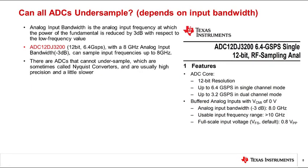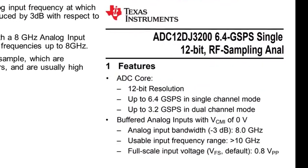Now let's understand what kind of ADCs can be used for undersampling and what other things should be kept in mind when choosing the ADC. After sampling rate, the second most important parameter is analog bandwidth of an ADC. Analog input bandwidth is the analog input frequency at which power of the fundamental is reduced by 3 dB with respect to the low frequency value. TI offers many devices that can do undersampling.